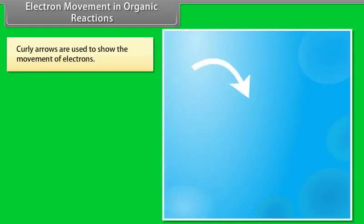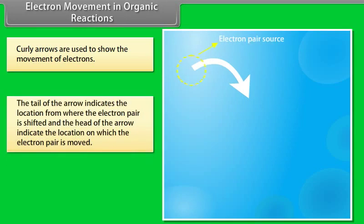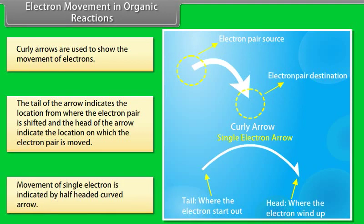Electron movement in organic reactions: curly arrows are used to show the movement of electrons. The tail of the arrow indicates the location from where the electron pair is shifted, and the head of the arrow indicates the location on which the electron pair is moved. Movement of a single electron is indicated by a half-headed curved arrow.